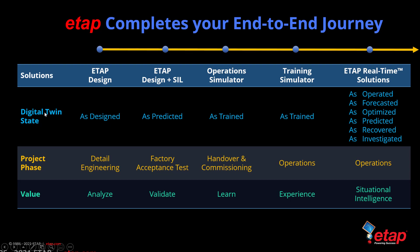The ETAP digital twin applied across the entire life cycle results in a conservative estimated savings of about 20%. ETAP completes your end-to-end journey by taking the digital twin in the as-design state — which most users may already use — then connecting it to software-in-the-loop for an as-predicted design model. Combining that with real-time data during the handover commissioning stage produces an as-trained model, which continues to improve as we enter full-scale operations and acts as a very effective operator training simulator. Finally, the real-time solutions take the digital twin in the as-operated state, enabling us to forecast, optimize, predict, recover, and investigate whenever there is any outage or issue in the system.